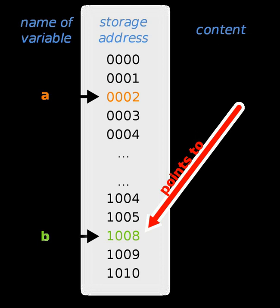The Perl programming language supports pointers, although rarely used, in the form of the pack and unpack functions. These are intended only for simple interactions with compiled OS libraries. In all other cases, Perl uses references, which are typed and do not allow any form of pointer arithmetic. They are used to construct complex data structures.